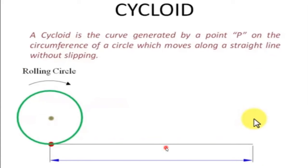An application or example of cycloid — for clear understanding we can consider a two-wheeler front wheel rotating for one complete revolution on a straight road. Or just rotate your coin on a horizontal table — it will be rotating 360 degrees, one complete revolution, without slipping. These are the examples for cycloid. The key term is without slipping.